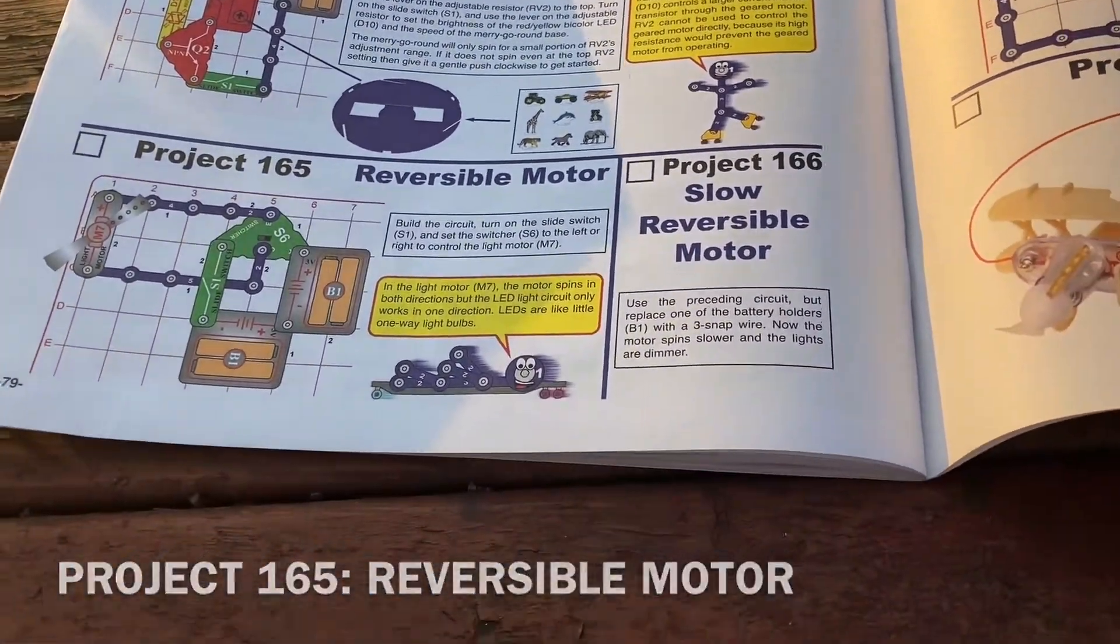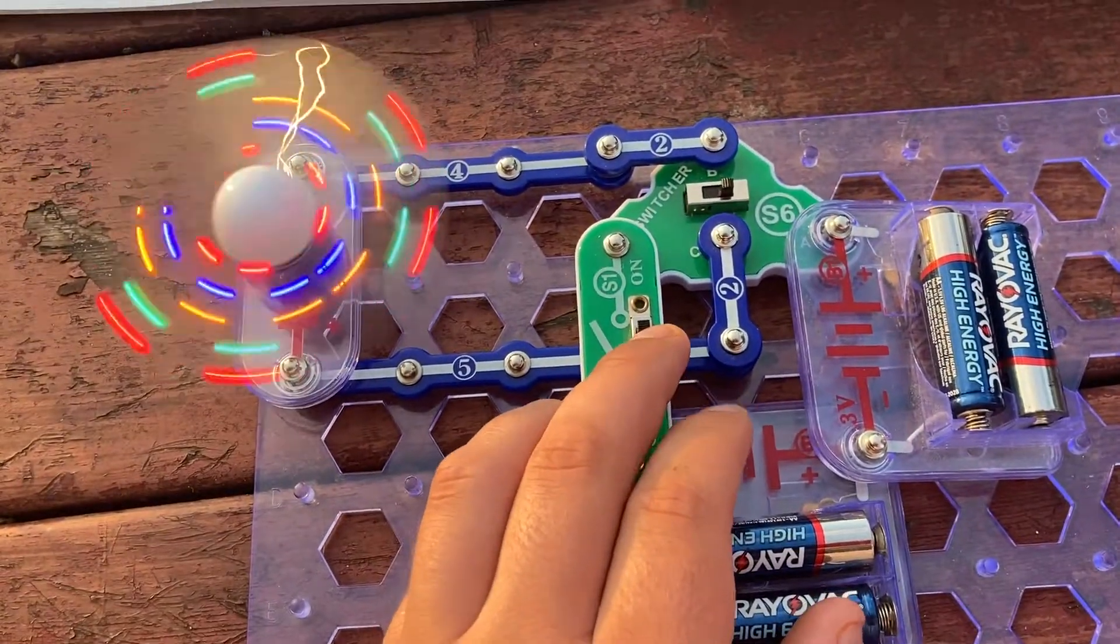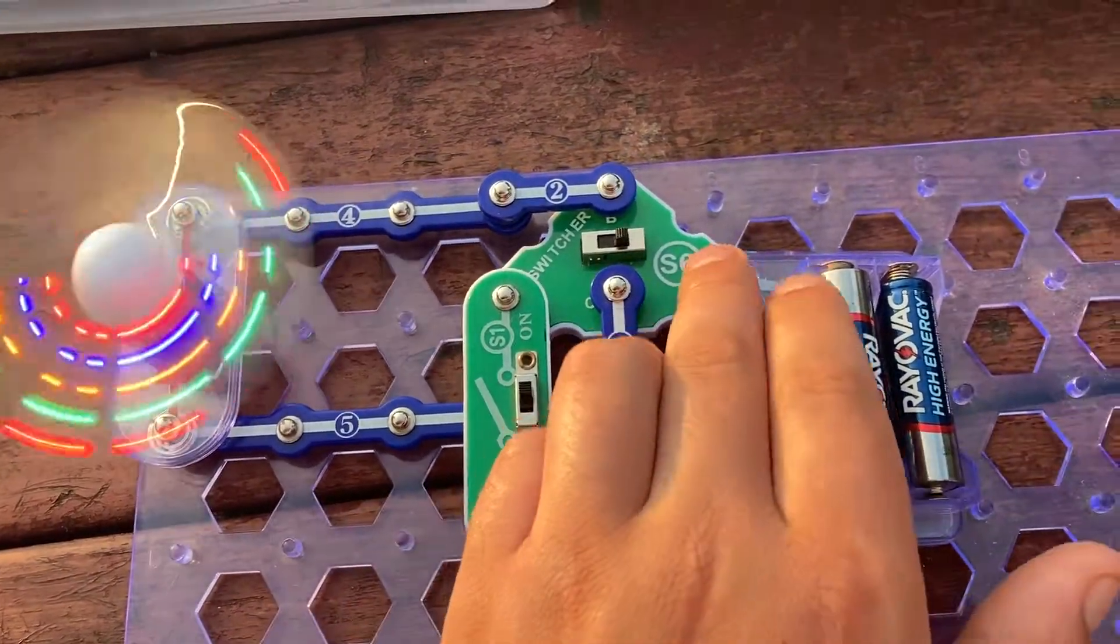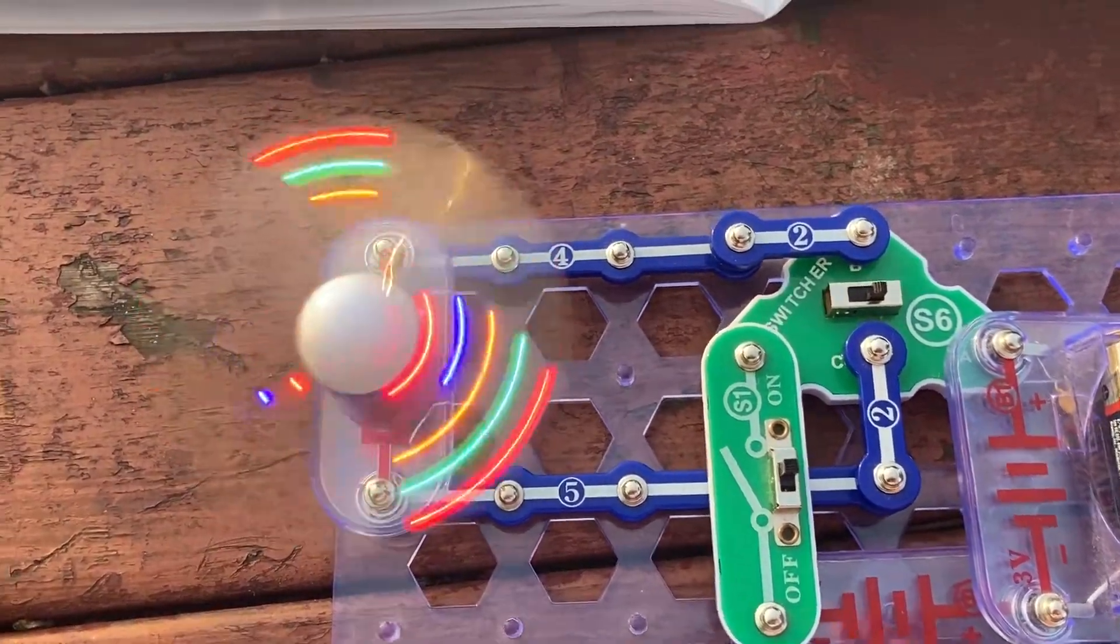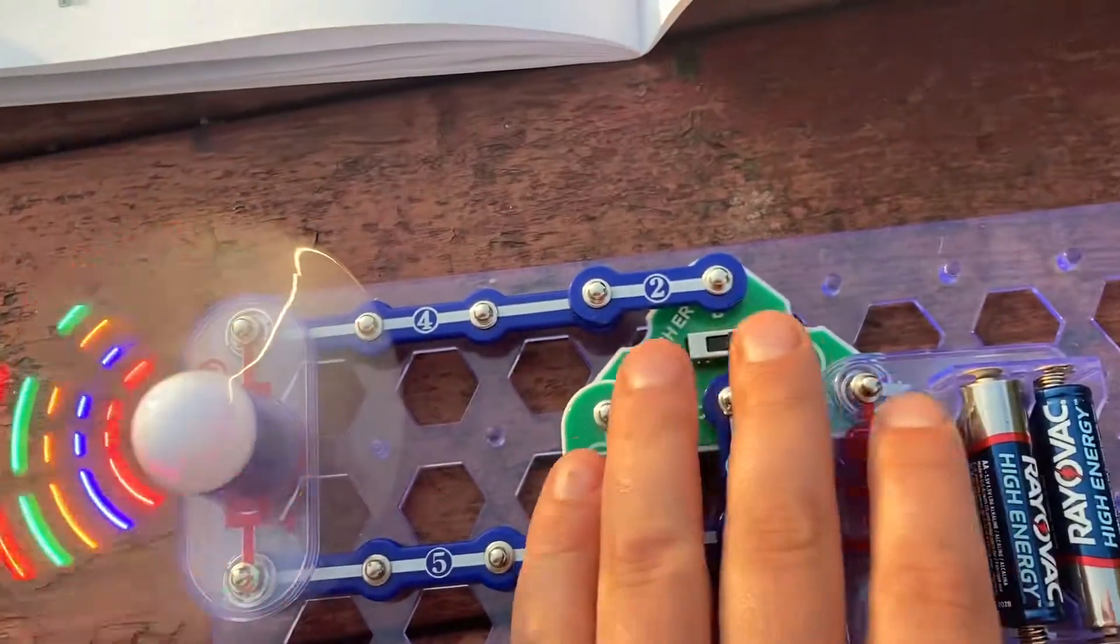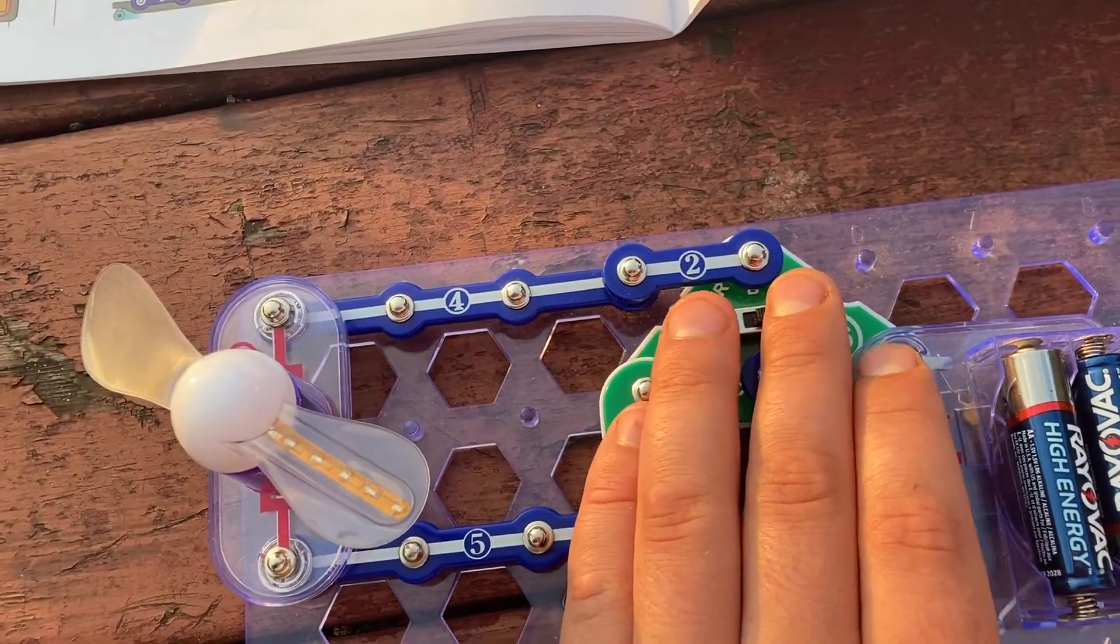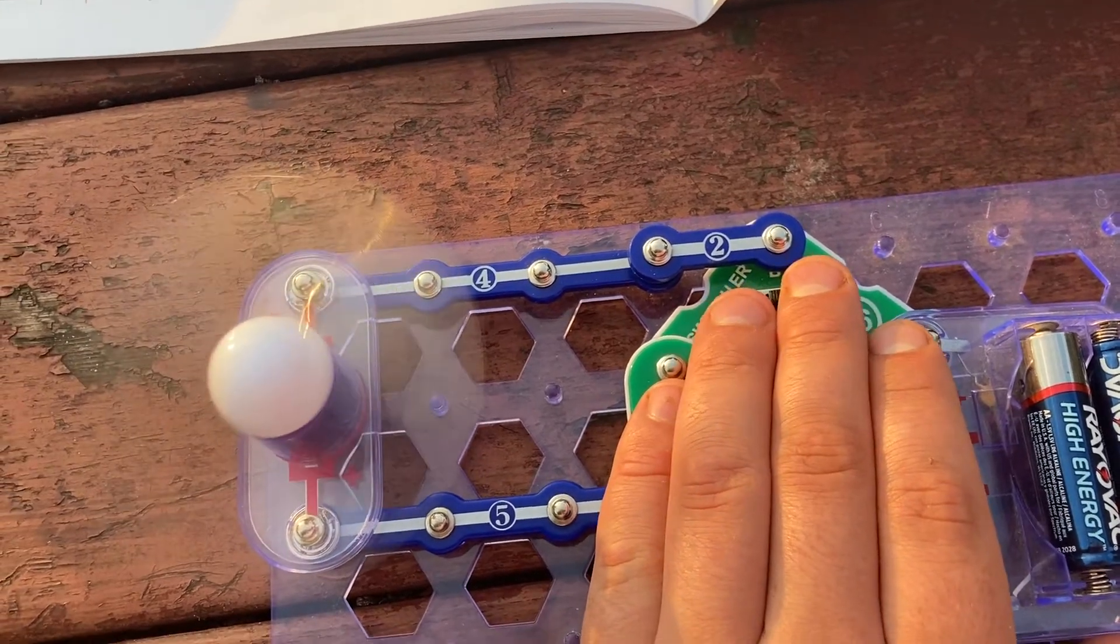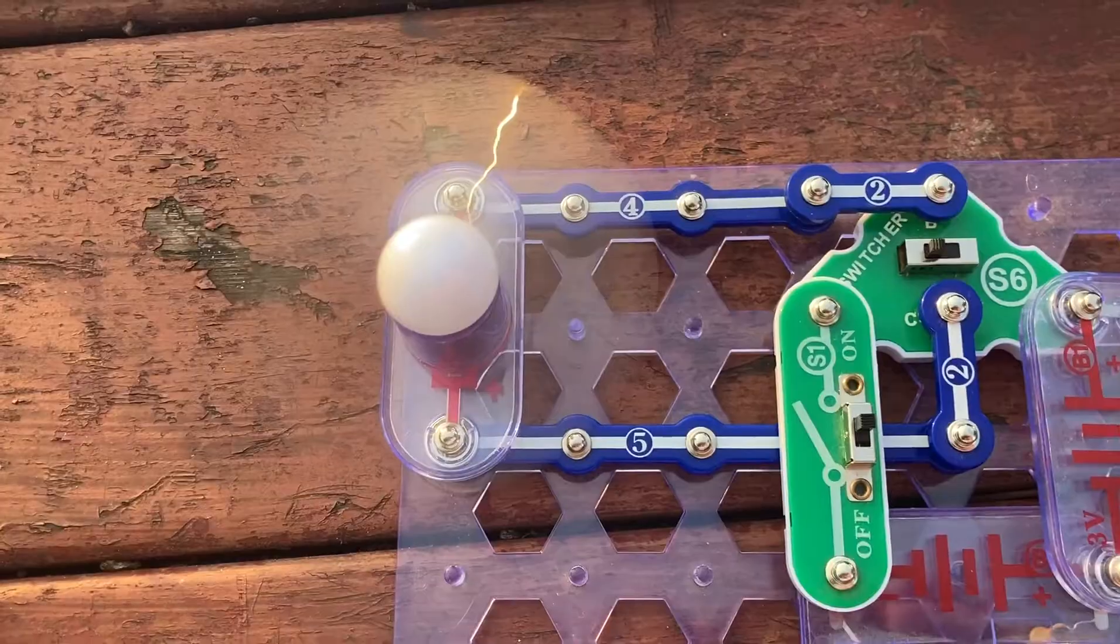Project 165 is reversible motor. This project is very simple. I have the light motor and with the switcher to my right, I turn on the slide switch and the motor spins and lights up. Now, when I move the switcher to the center position, the motor stops. But when I move it to the left, it now spins in the opposite direction, except now the LEDs do not come on.